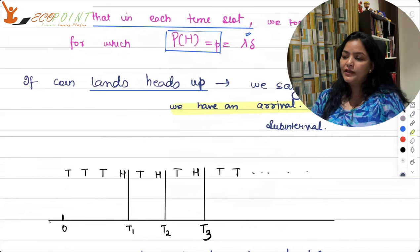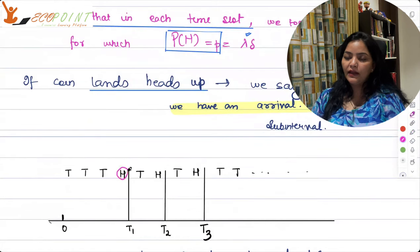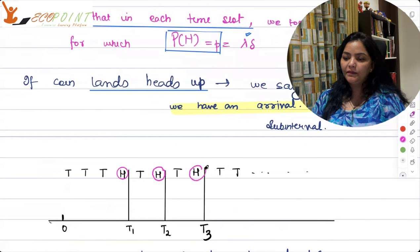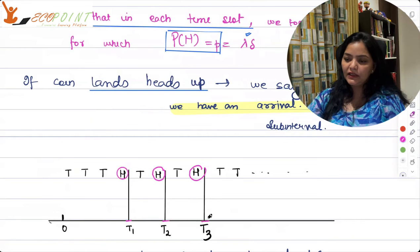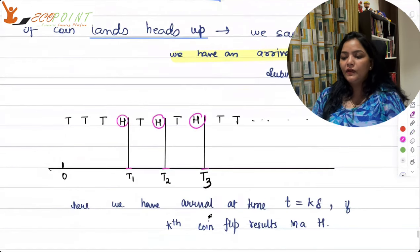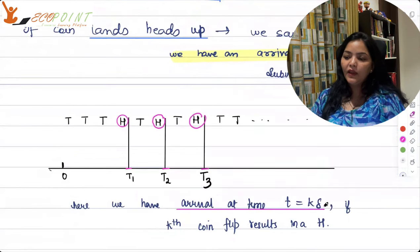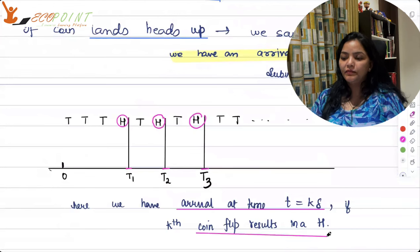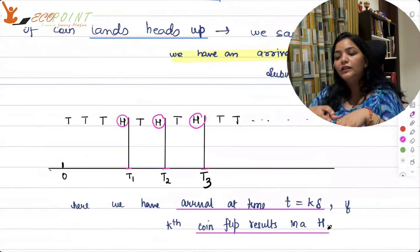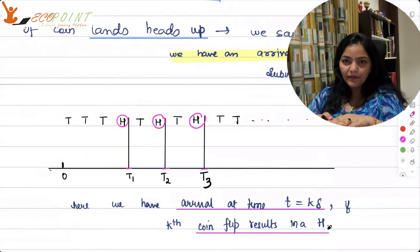So what is happening is, at this junction you are getting heads. This is my fourth trial, fourth toss, in which I'm getting head. Then my sixth, then my eighth. Say this is your t1, this is your t2, this is your time t3, when arrivals are happening. Here we have arrival at time t which is k delta.